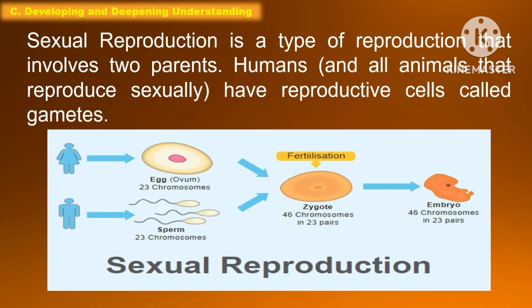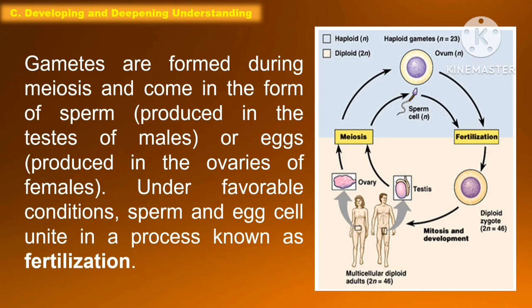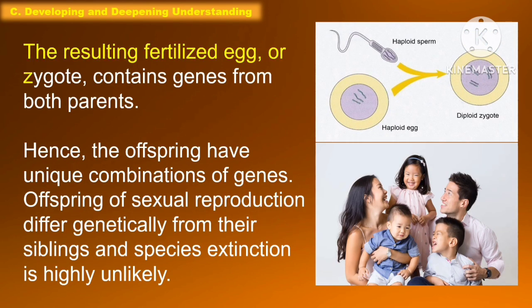Sexual reproduction is a type of reproduction that involves two parents. Humans and all animals that reproduce sexually have reproductive cells called gametes. Gametes are formed during meiosis and come in the form of sperm produced in the testes of males, or eggs produced in the ovaries of females. Under favorable conditions, sperm and egg cells unite in the process known as fertilization. The resulting fertilized egg or zygote contains genes from both parents.